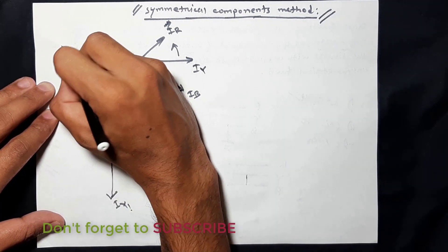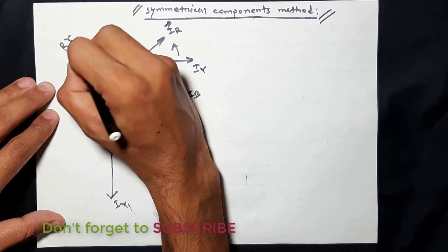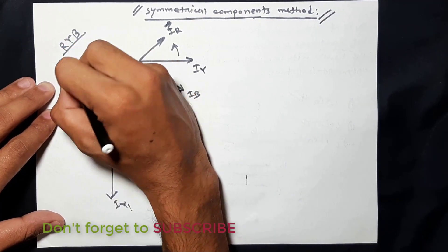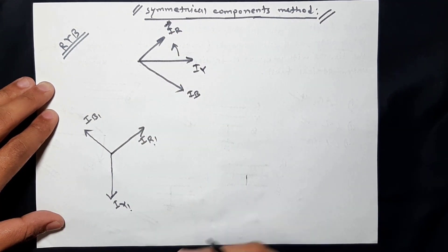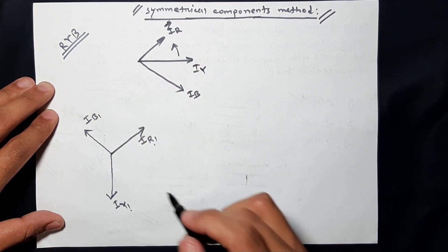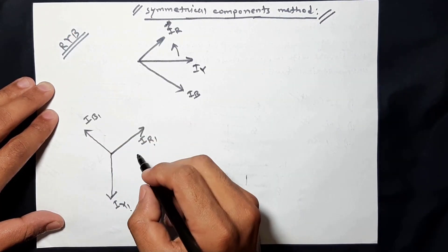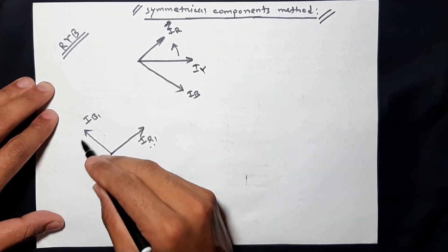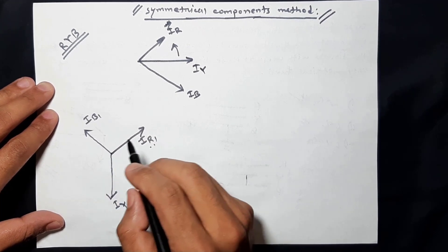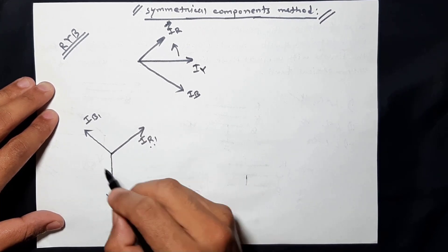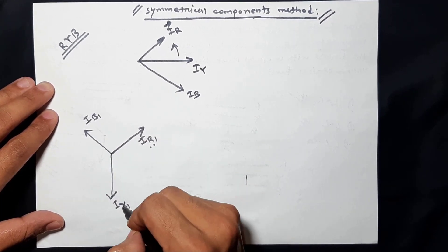In the positive sequence, we know the sequence is red, yellow, blue — clockwise. So the positive sequence components follow the red, yellow, blue clockwise sequence. Then we move to the negative sequence.